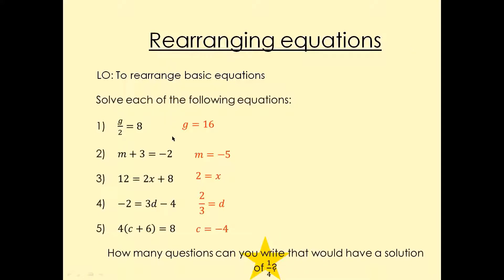Okay guys, a bit of a heads up. Just remember when you rearrange equations: here is divide. When you move two to the other side, that's going to become times. So that's going to become eight times two, which is 16. This is plus three here. And if you move a positive number to the other side, that's going to become negative.